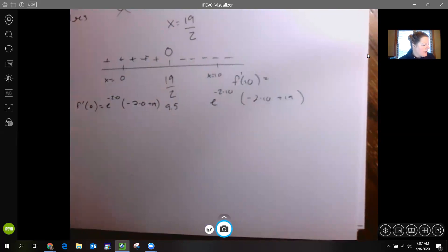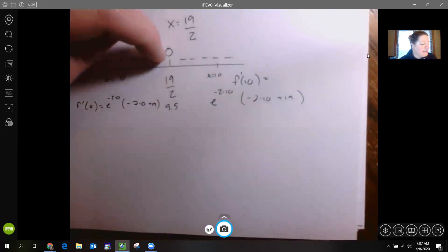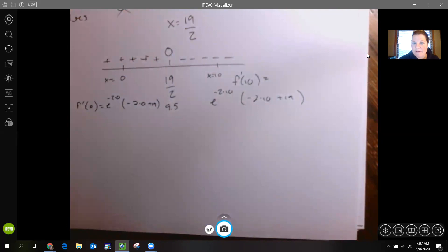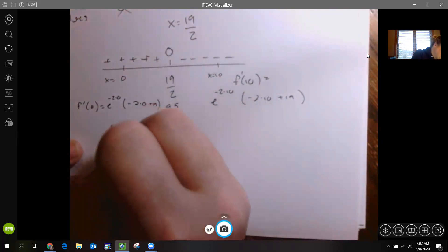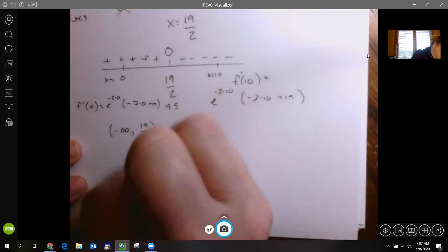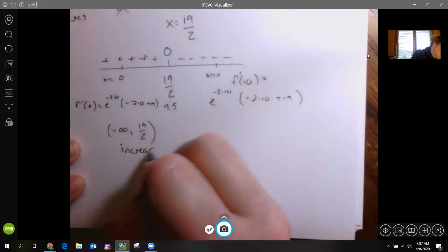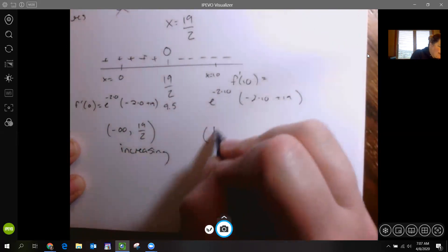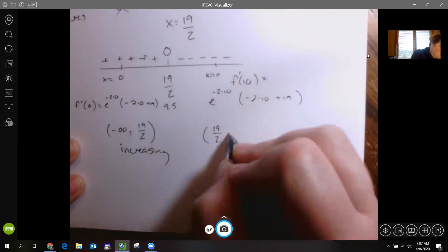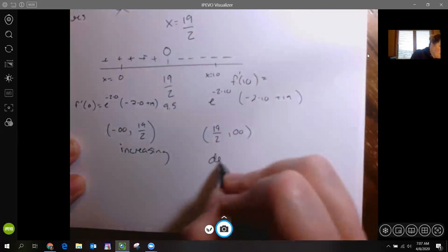We would say from negative infinity to 19/2, we're increasing. And we would say from 19/2 to infinity, we're decreasing.